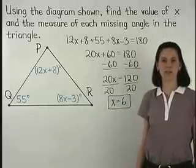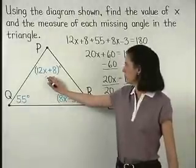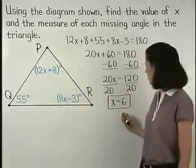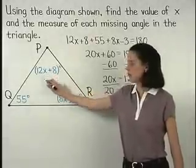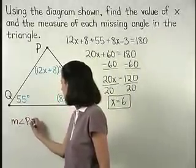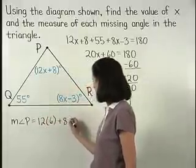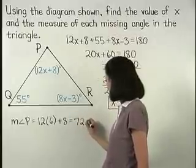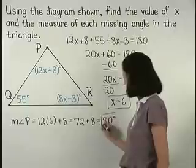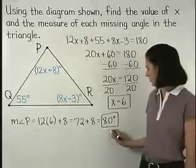Now to find the measures of each of the missing angles in the triangle, remember that the measure of angle P is 12x plus 8. So if we plug a 6 in for x, then we have, for the measure of angle P, 12 times 6 plus 8, which is 72 plus 8, or 80 degrees. So the measure of angle P is 80 degrees.